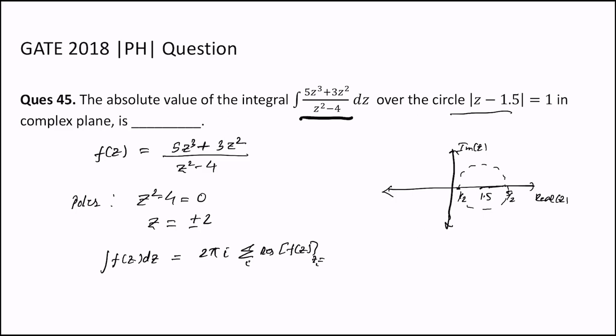If we have n number of poles, then the integral around this contour can be represented by the sum of the residues of the poles lying within this circle region. In our question, the poles are at +2 and -2, so +2 lies somewhere here.